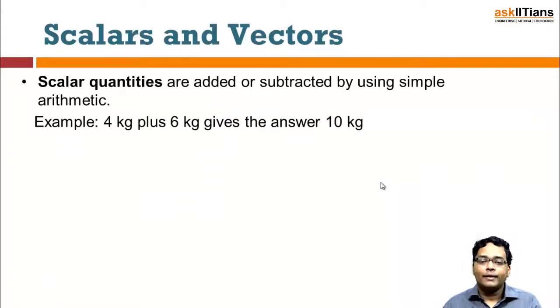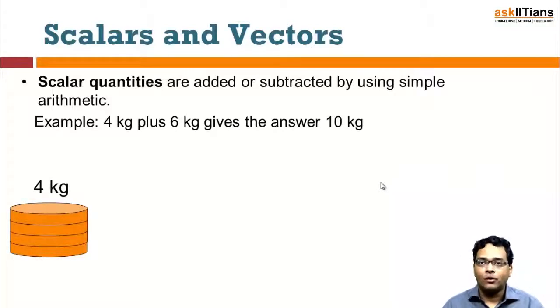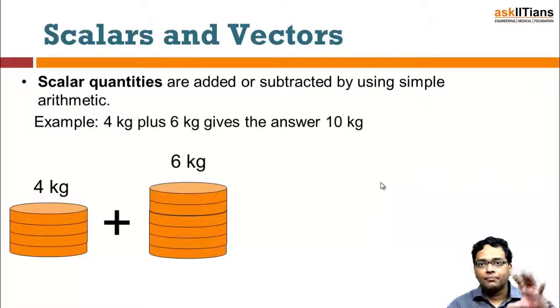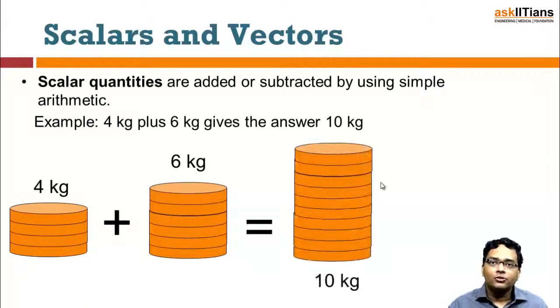Scalar quantities can be added and subtracted using simple arithmetic. For example, if you have a 4 kilogram object and a 6 kilogram object, and you add the two objects—let's say you have the 4 kilogram object kept on the 6 kilogram object—that results in a 10 kilogram object. It's a linear summation, simple summation.